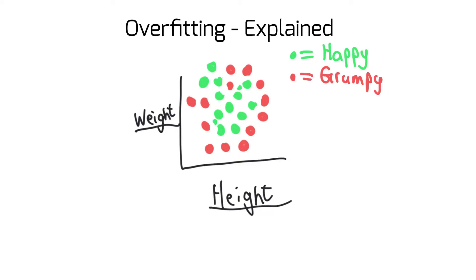We're going to look at the example of predicting whether a person is happy or grumpy given their weight and height. We have a training set of information, so this is supervised learning — meaning that given our inputs, we have the corresponding output for some n individuals. For these people we have their weight and height as inputs, and we know the true label of whether they're happy or grumpy.